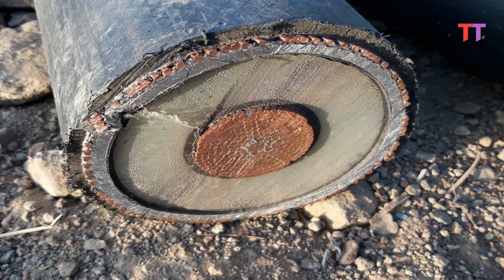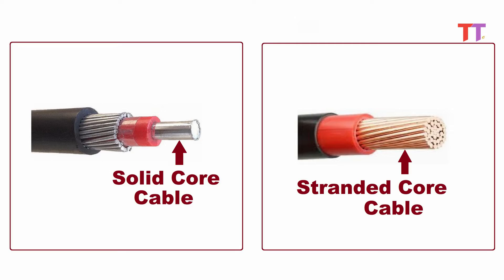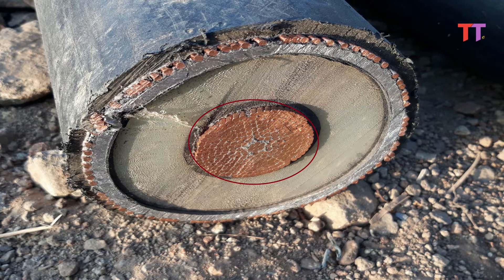Also, based on types of core, there are solid-core cables and stranded-core cables. The cross-section size and type of the core is decided by the magnitude of current it carries. Similarly, insulation of the cable is decided by the voltage level of the cable.